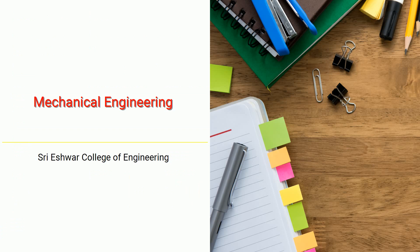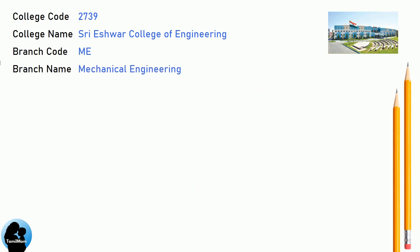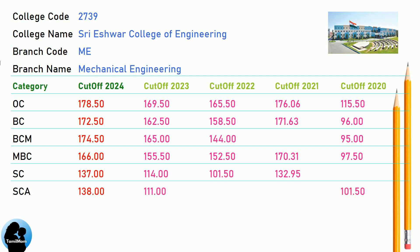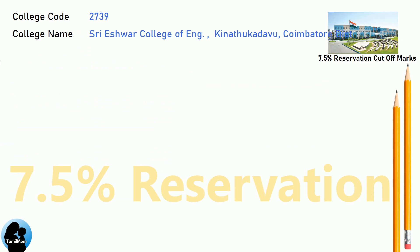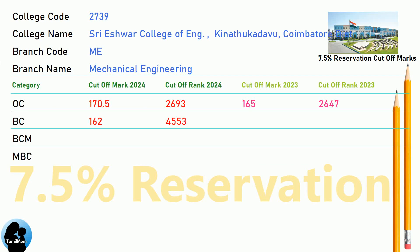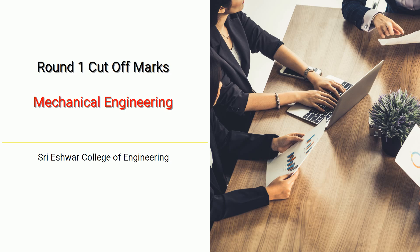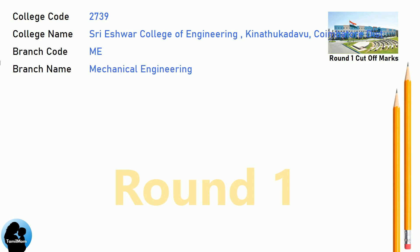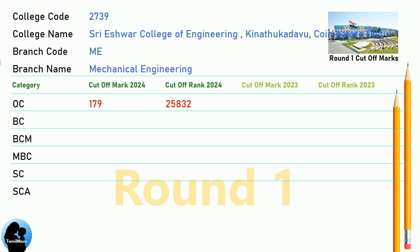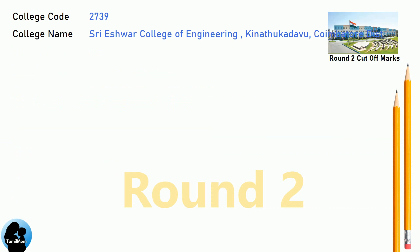DNA Cut-Off for Shri Aishwara College of Engineering in Mechanical Engineering. DNA 7.5 Reservation Cut-Off for Shri Aishwara College of Engineering in Mechanical Engineering. DNA Round 1 Cut-Off for Shri Aishwara College of Engineering in Mechanical Engineering. DNA Cut-Off for Shri Aishwara College of Engineering in Mechanical Engineering.